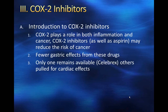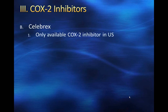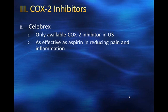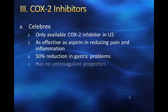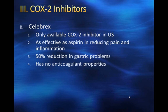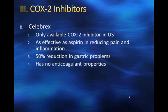Celebrex is our only available COX-2 inhibitor in the United States. It's as effective as aspirin in reducing pain and inflammation. It has a 50% reduction in gastric problems compared to aspirin and has no anticoagulant properties. It isn't something everyone can take — if you're allergic to sulfa drugs, you cannot take Celebrex — but aside from that, it is something you can think about taking.